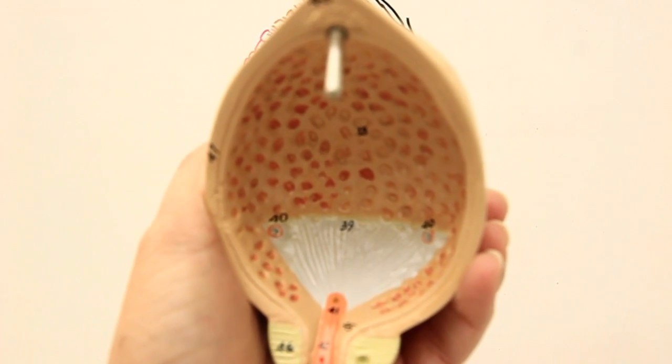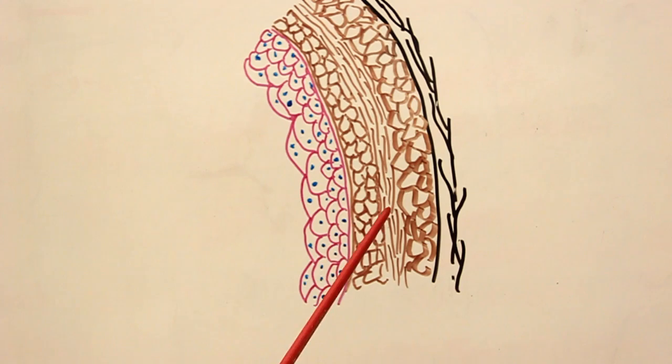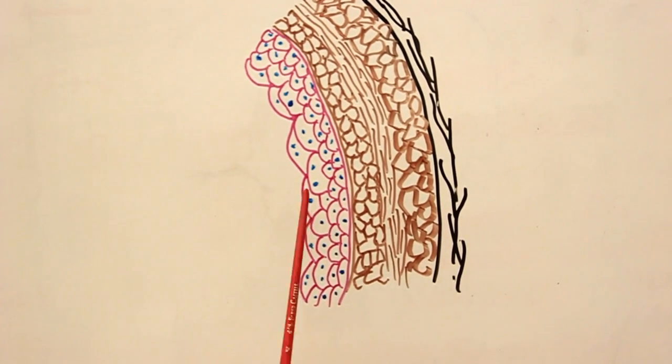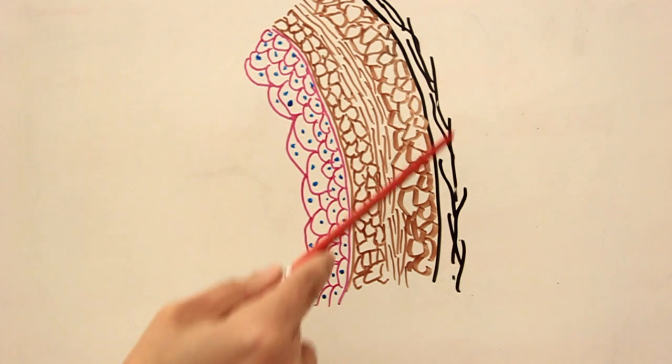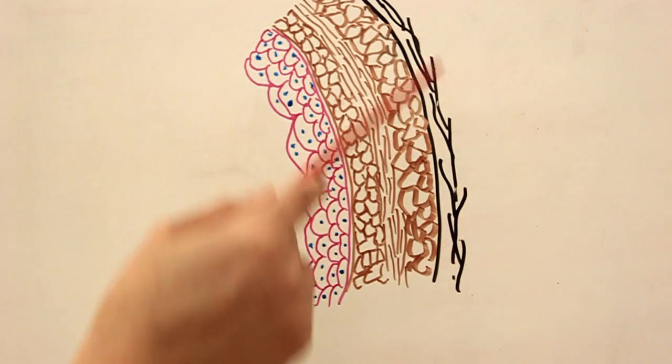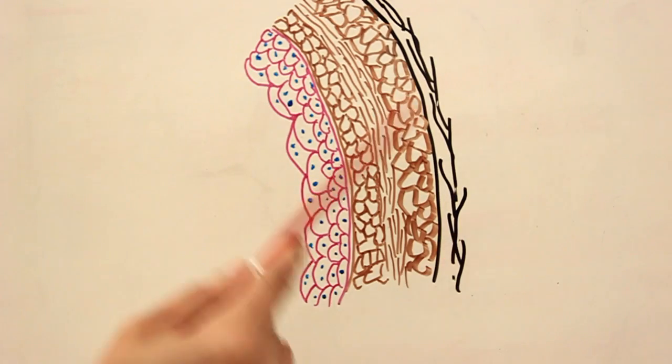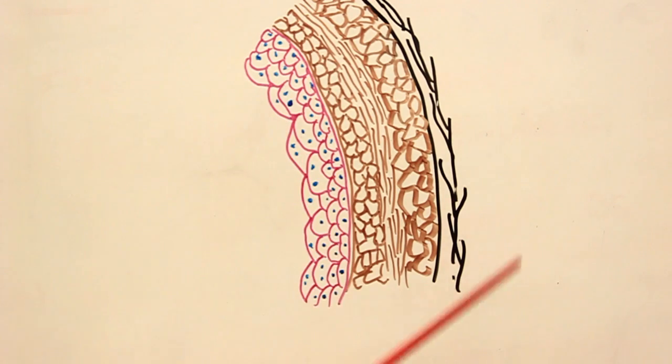Have a look at this drawing. It's a cut section through the wall of the bladder. Just like any other organ, the outer layer of the wall is formed by the adventitia. The superior surface or the superior wall of the bladder, the adventitia includes the peritoneum.